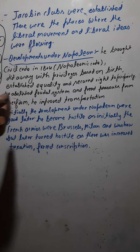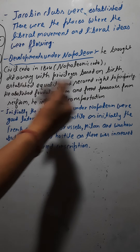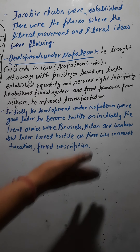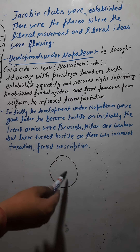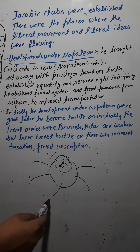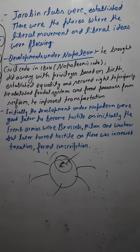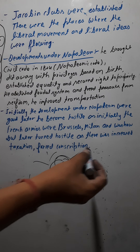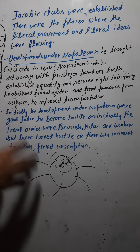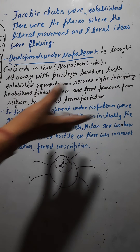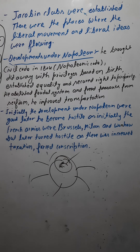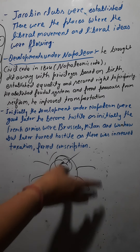Now there are some bad points as well. Initially, the developments under Napoleon were good, but later he became hostile. The French armies were initially welcomed in Brussels, Belgium, Milan, Italy, and Warsaw because Napoleon was promoting liberal ideas. The Jacobin clubs in those places were also promoting liberal ideas, so the French armies were welcomed in these countries.